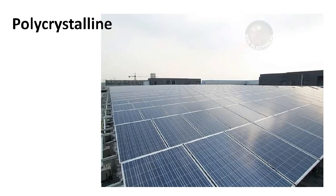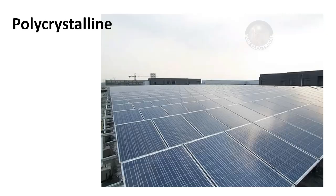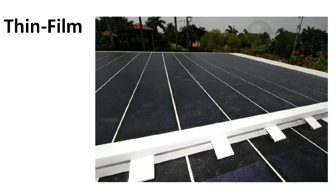Comparing efficiency: monocrystalline solar panels have higher efficiency — around 20 percent efficiency. Polycrystalline panels have less efficiency compared to monocrystalline — around 15 to 17 percent efficiency. Thin film panels have the lowest efficiency — around 11 percent efficiency.